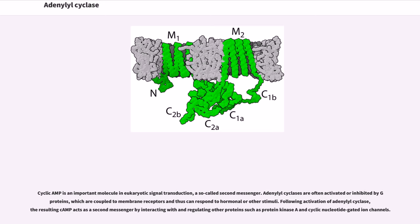Cyclic AMP is an important molecule in eukaryotic signal transduction, a so-called second messenger. Adenylyl cyclases are often activated or inhibited by G proteins, which are coupled to membrane receptors and thus can respond to hormonal or other stimuli. Following activation of adenylyl cyclases, the resulting cAMP acts as a second messenger by interacting with and regulating other proteins such as protein kinase A and cyclic nucleotide gated ion channels.